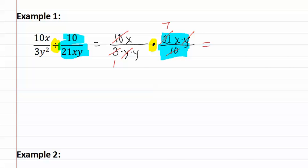I now multiply the numerators together and I find x, x and a seven, which means I have seven and two x's written as x squared over a single y. There are no more factors in common, therefore I have found my answer.